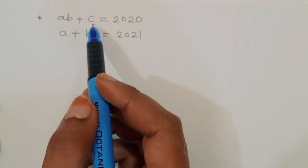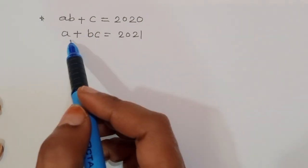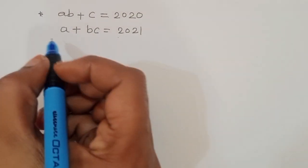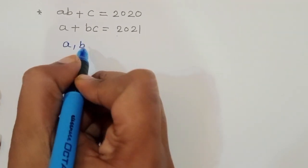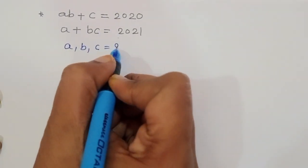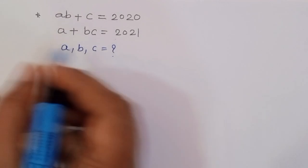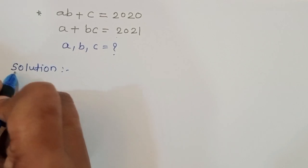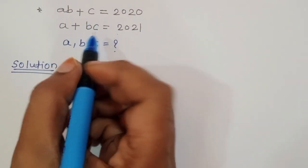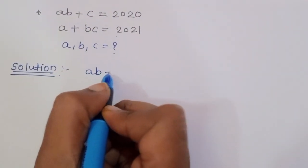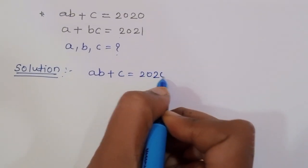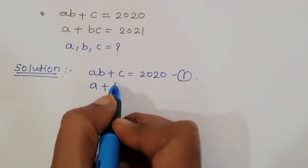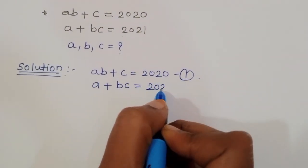The question is: given a(b+c) = 2020, equation 1, and (a+b)c = 2021, equation 2, we have to find out the value of a, b, and c.